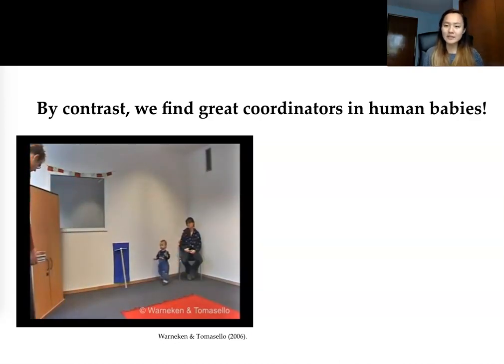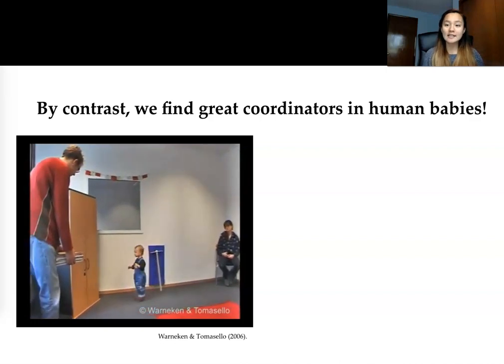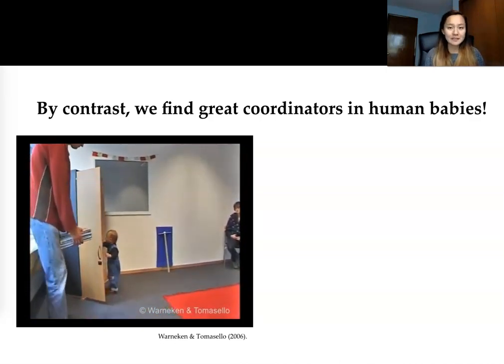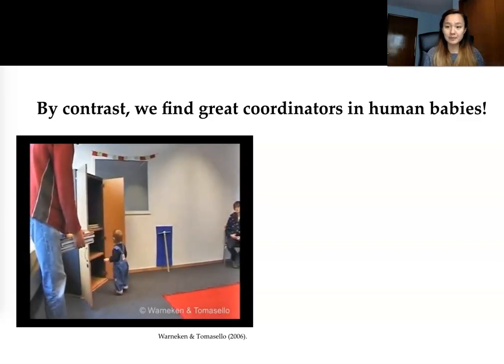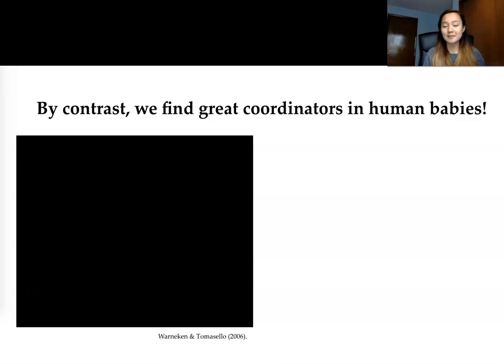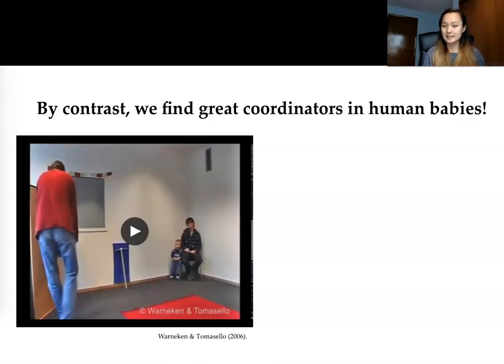And understands what this man is trying to accomplish, and tries to help him out. Isn't that amazing? This baby can quickly and flexibly infer the intentions of other people, otherwise known as theory of mind. And it's exactly these kinds of common sensibilities that we want our AI systems to have.